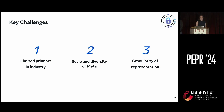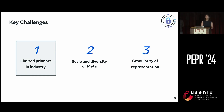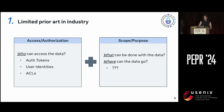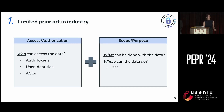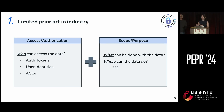The first key challenge is that there is very limited prior art in the industry for this — there are no well-established techniques for doing purpose limitation at scale. We have a lot of good prior art for access and authorization, the who-based privacy question of who can access data, using things like auth tokens, user identities, and ACLs. But now we're trying to solve a different problem: the scope and purpose problem of what can be done with the data, where it can go, and limiting it based on the purposes it's used for.